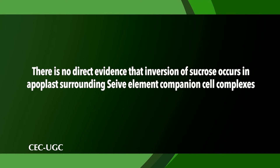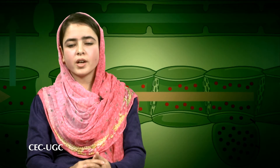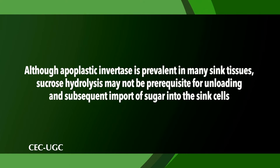It has been suggested that apoplastic unloading might be confined to axial unloading and to those sinks where symplastic unloading is incompatible with sink function, such as in sugar-storing sinks where osmotically active solutes are stored against a concentration gradient. While many sinks clearly possess apoplastic invertase activity, there is no direct evidence that inversion of sucrose occurs in the apoplast surrounding the sieve element companion cell complexes. Recent studies utilizing asymmetrically labeled sucrose and the sucrose analog fluorosucrose — a substrate poorly hydrolyzed by invertase — have provided evidence that sucrose may be taken up by both sugar cane cells and maize endosperm cells without prior hydrolysis. Thus, although apoplastic invertase is prevalent in many sink tissues, sucrose hydrolysis may not be a prerequisite for the unloading and subsequent uptake of sugar into sink cells.